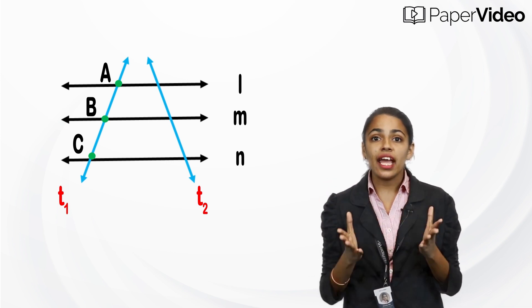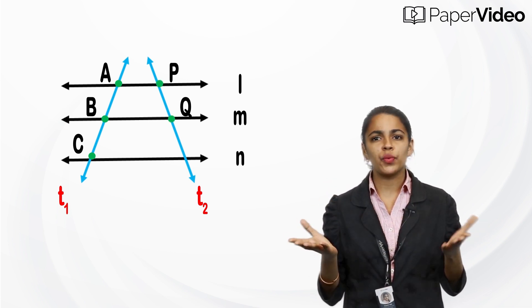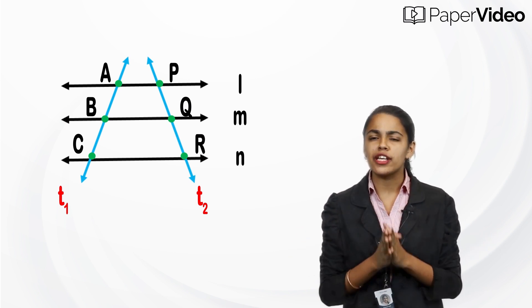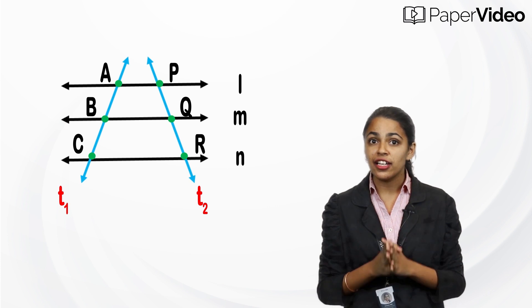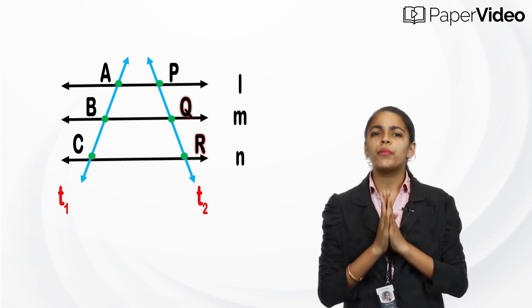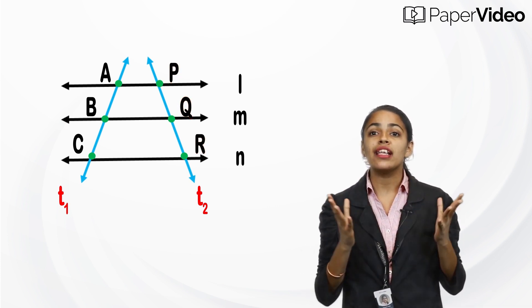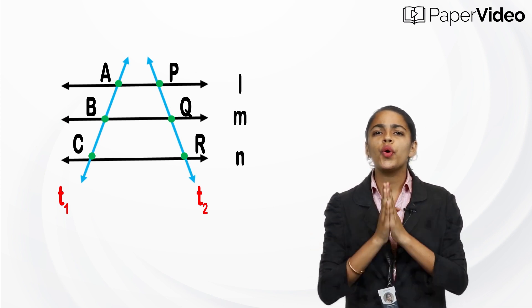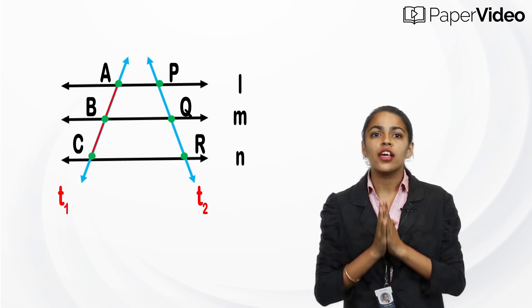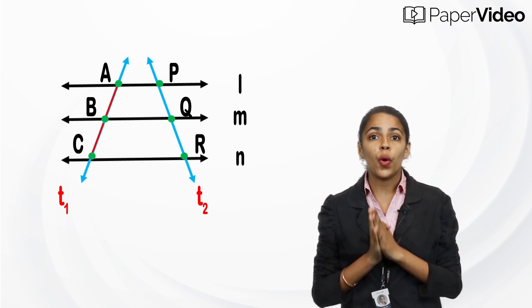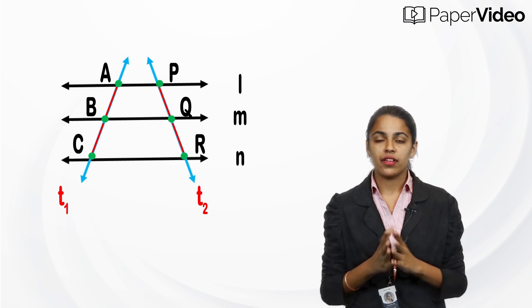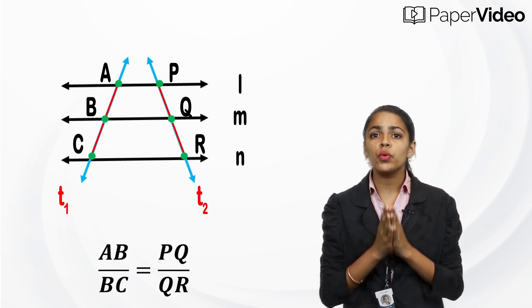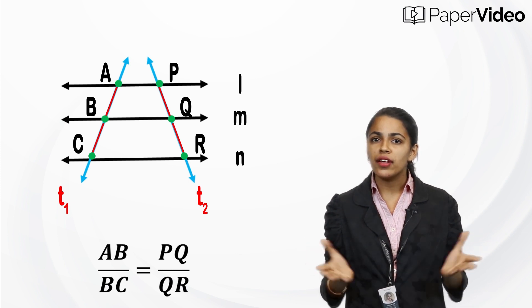Let us now draw another transversal t2 of these parallel lines, intersecting them at points P, Q, and R. The transversal t2 makes two intercepts: PQ and QR. The property of three parallel lines states that the ratio AB/BC is equal to PQ/QR.